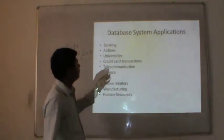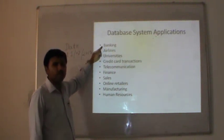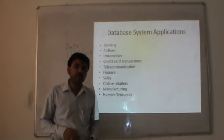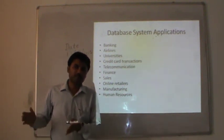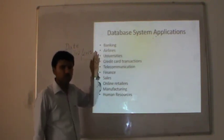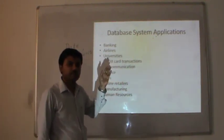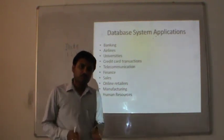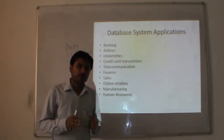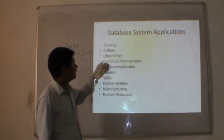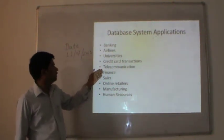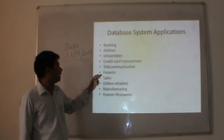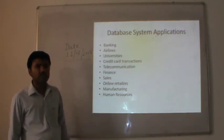Some real-time examples of database systems include banking systems, where you can pay money online using the database at particular banks. Airlines — you can easily reserve seats with the help of such applications. In university systems, you can enter your roll number and see your profile or academic records of a particular person. Credit card and transactions, telecommunications, finance, sales, online retailers, manufacturing, and human resources also use databases.